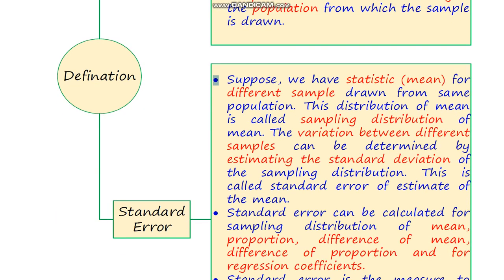Now we move towards standard error. Suppose we have a statistic — consider here the statistic under consideration is mean. We have a statistic of mean for different samples drawn from the same population. This distribution of means is called the sampling distribution. The variation between different samples can be calculated by estimating the standard deviation of the sampling distribution. This whole procedure is called standard error.